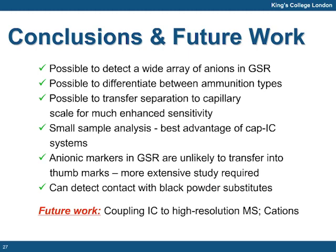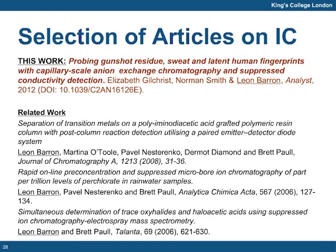Conclusions. We were able to detect a range of GSR-related species and in some way differentiate the ammunition type used. Most importantly, transfer to capillary IC was smooth and offered superior mass sensitivity. This, in my opinion, is the greatest advantage of these systems, coupled with very low eluent usage. More work is required to understand the deposition of these GSR species on the hands after firing, but as a first attempt, it was possible to detect it. Direct contact with low explosives was possible by analysis of latent human fingerprints. We do hope to carry on by developing IC-MS-based methods, as well as finishing some similar work examining cation content in GSR. This work was accepted in January to Analyst and is available online as an advanced article.